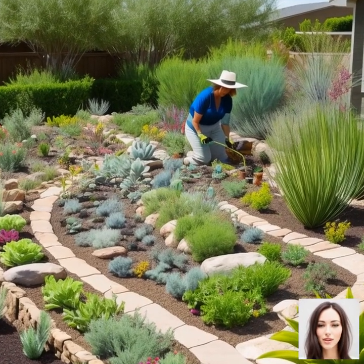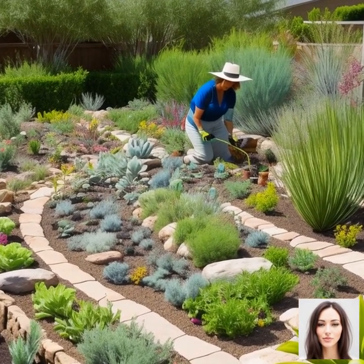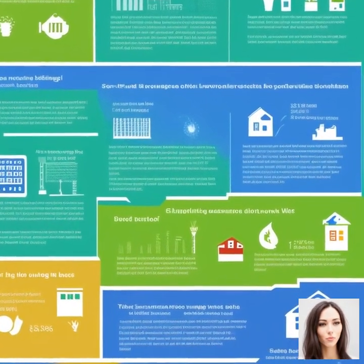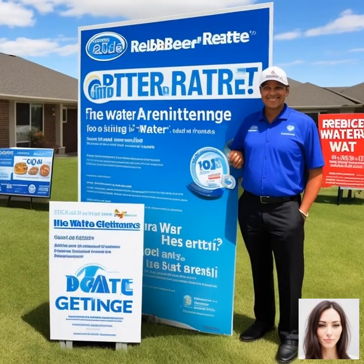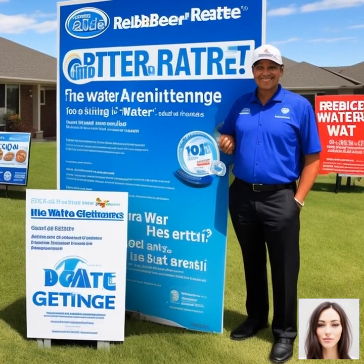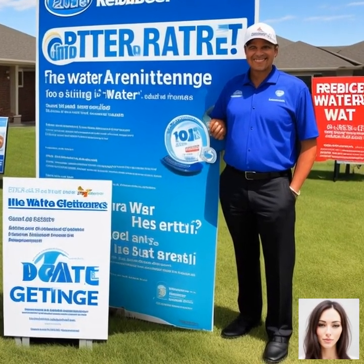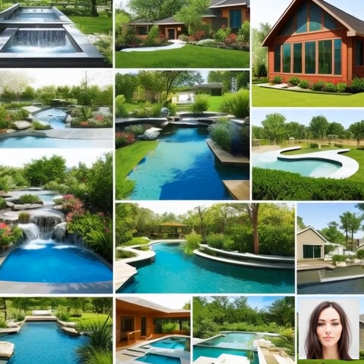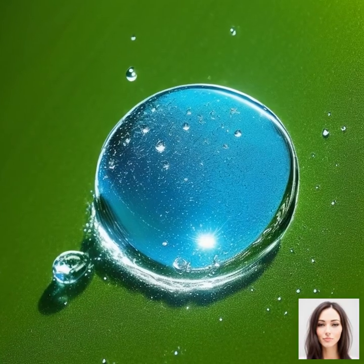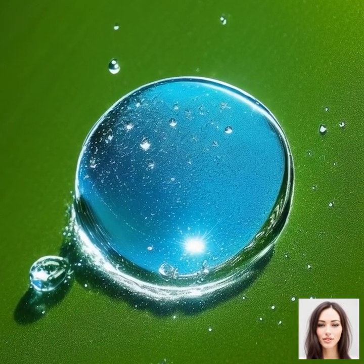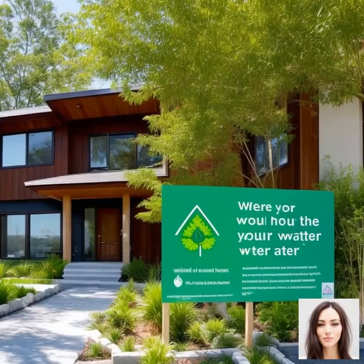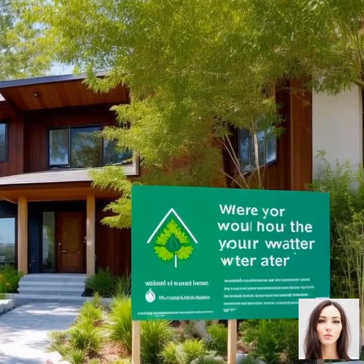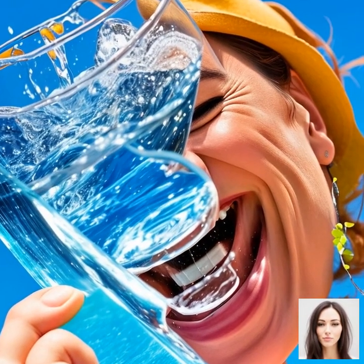And let's not forget about landscaping. By choosing native plants that are adapted to the local climate, we can create beautiful gardens that require minimal watering. Or we might consider xeriscaping, which is a style of landscaping that eliminates the need for irrigation altogether. It's also worth mentioning that conserving water isn't just good for the environment — it can also save you money. Water-efficient appliances and fixtures can reduce your water bills, and in some areas, you might even get rebates or incentives for installing them.